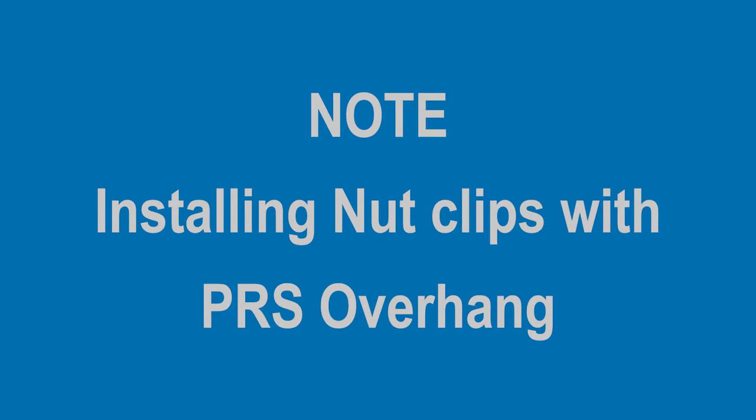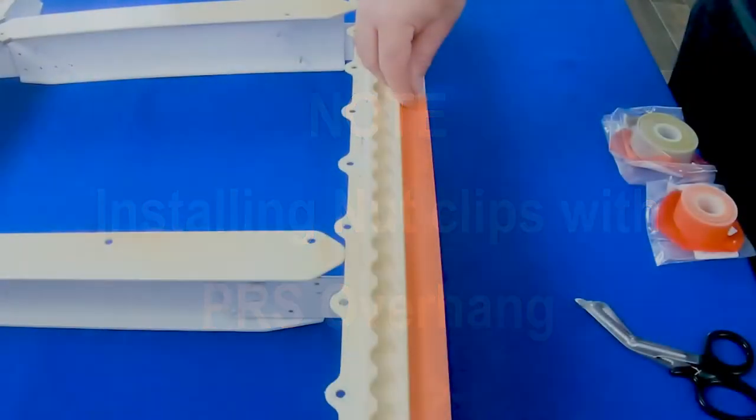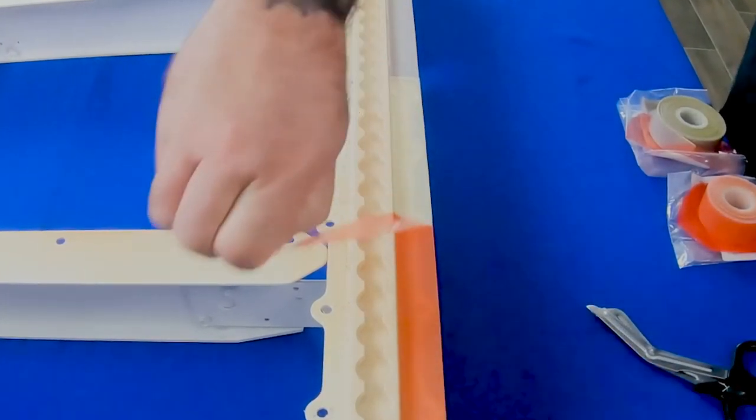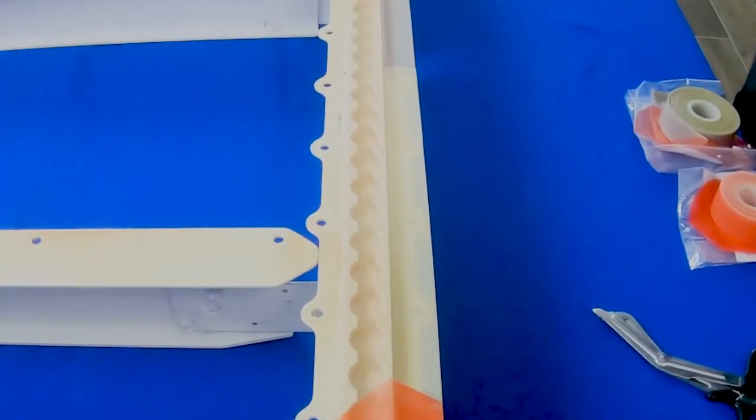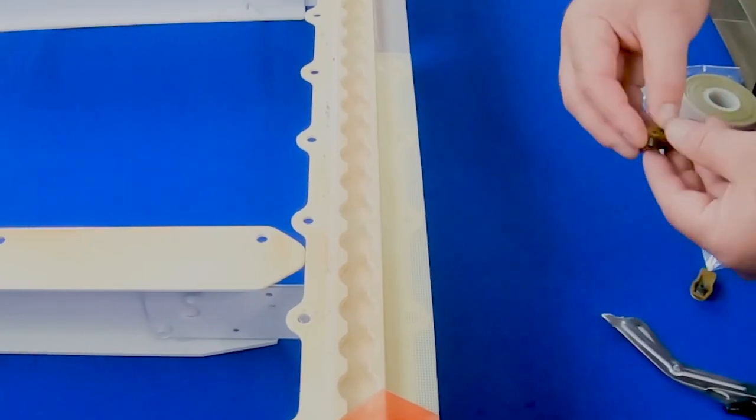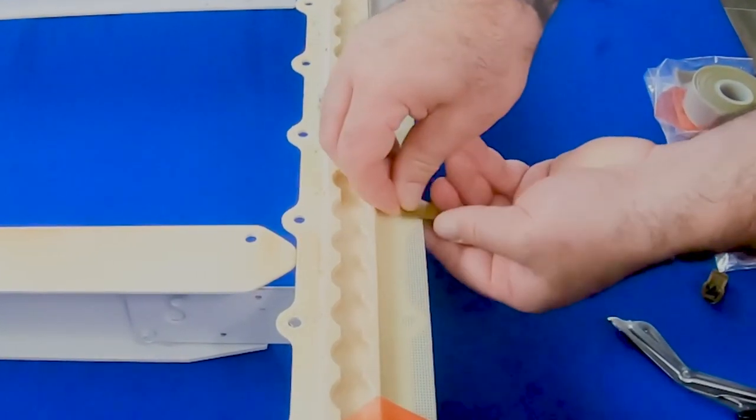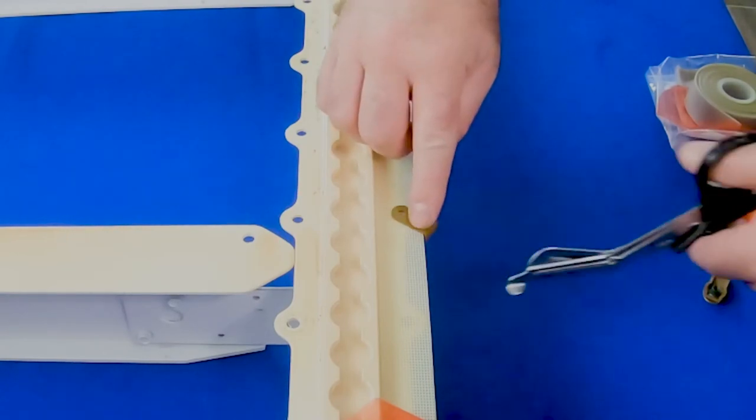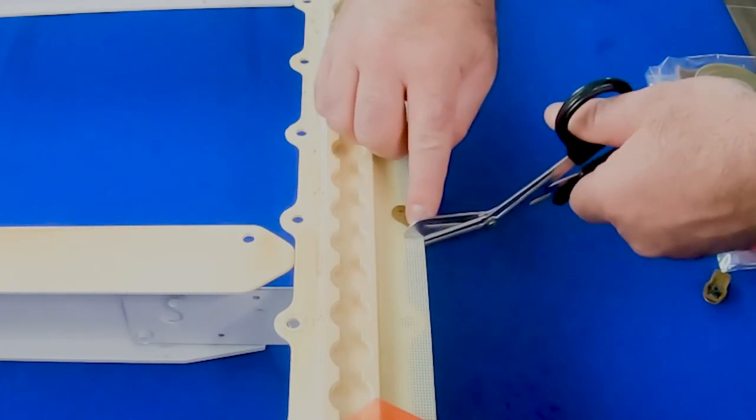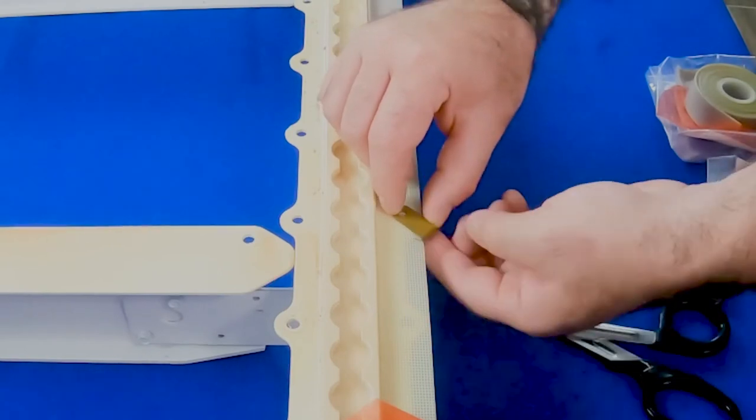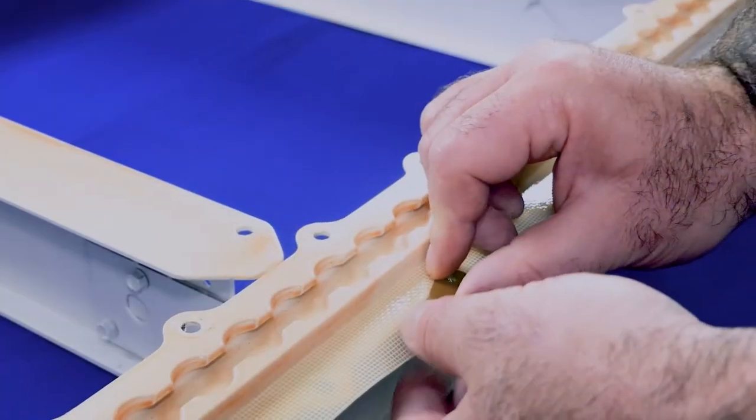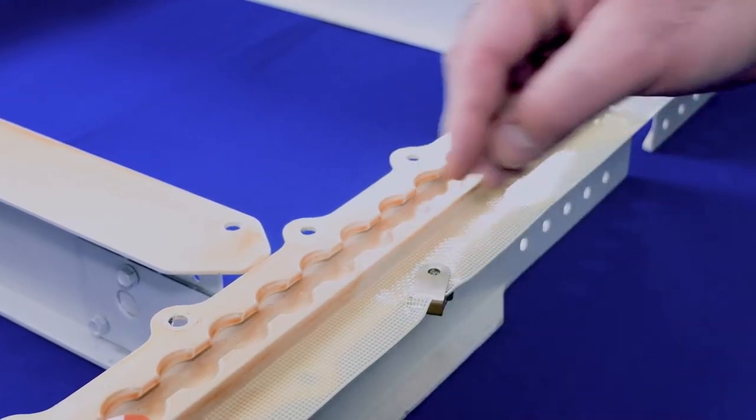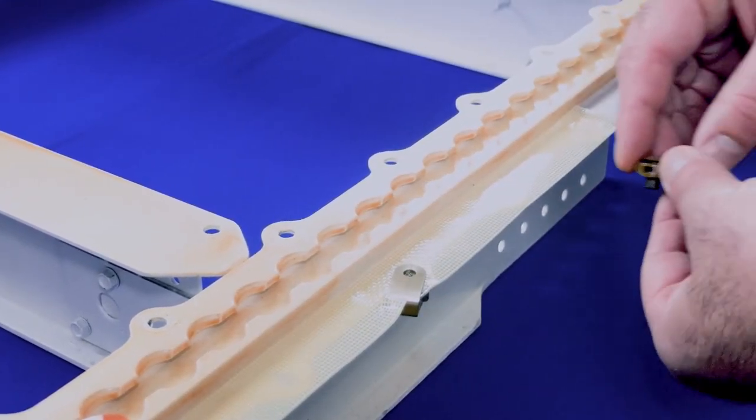Installing nut clips with PRS overhang. Once nut clips are installed, turn them clockwise until the back edge of the clip makes contact with the PRS. Using scissors, cut through the overhanging PRS to the edge of the structure from where the back of the clip touches the PRS. Continue to rotate clip clockwise until the back edge of the clip contacts the structure.